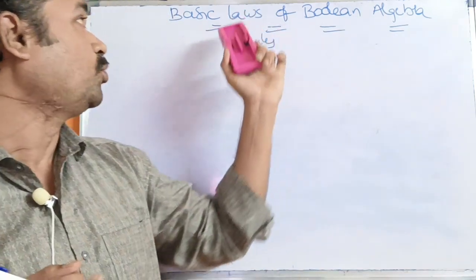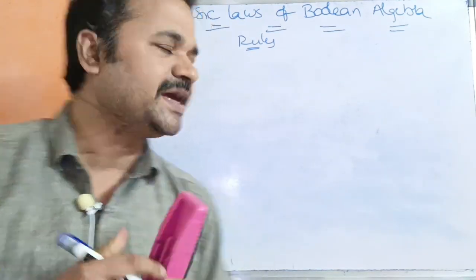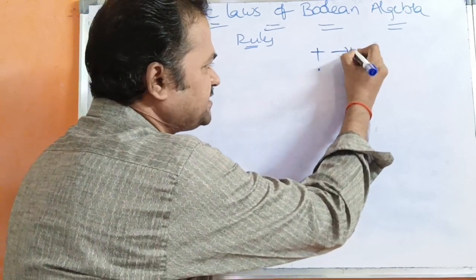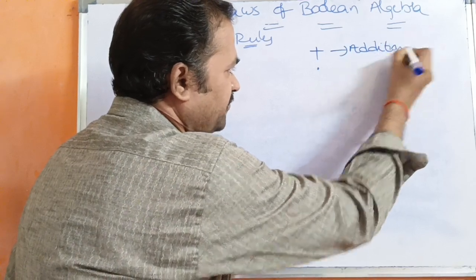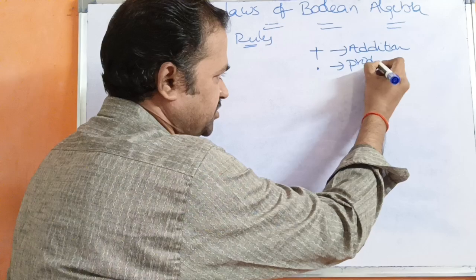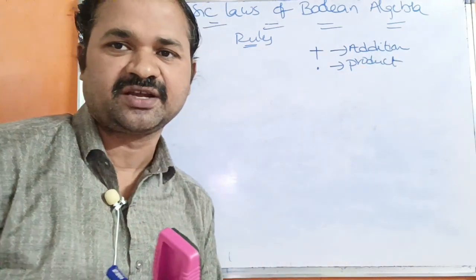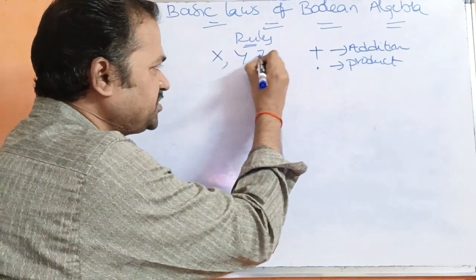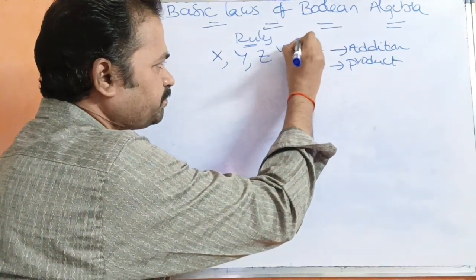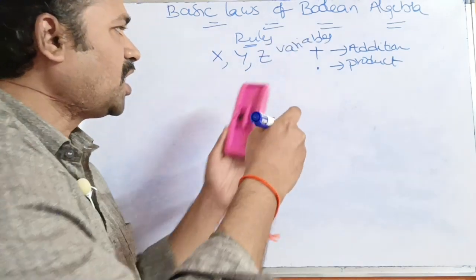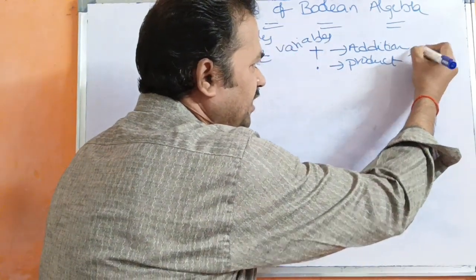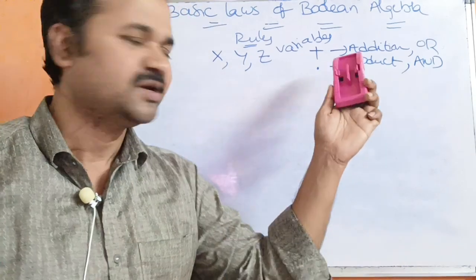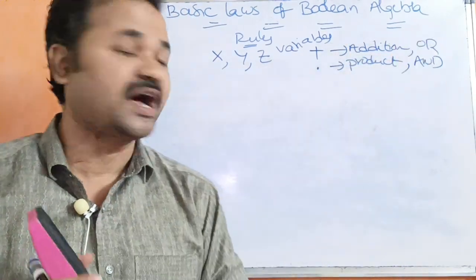Let us discuss all the basic laws one by one. We mainly use two operators: the plus operator and the dot operator. Plus stands for addition operation, which is the OR operation. Dot stands for product operation, which means multiplication or AND operation. So we have three variables x, y, and z.